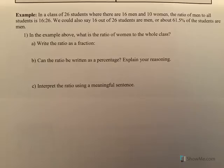In a class of 26 students where there are 16 men and 10 women, the ratio of men to all students is 16 to 26. We could also say 16 out of 26 are men, or 61.5%. We can change that to a percent because the total is 26. So we're talking about part-to-whole in this example.